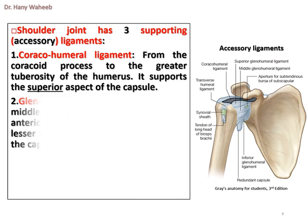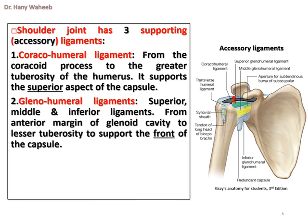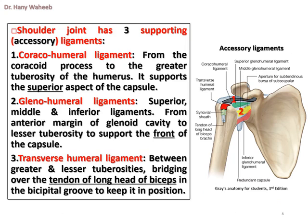The shoulder joint has three supporting accessory ligaments. 1. The coracohumeral ligament, from the coracoid process to the greater tuberosity of the humerus — it supports the superior aspect of the capsule. 2. The glenohumeral ligaments — superior, middle and inferior — from the anterior margin of the glenoid cavity to the lesser tuberosity, to support the front of the capsule. 3. The transverse humeral ligament, between the greater and lesser tuberosities, bridging over the tendon of the long head of biceps in its groove to keep it in position.